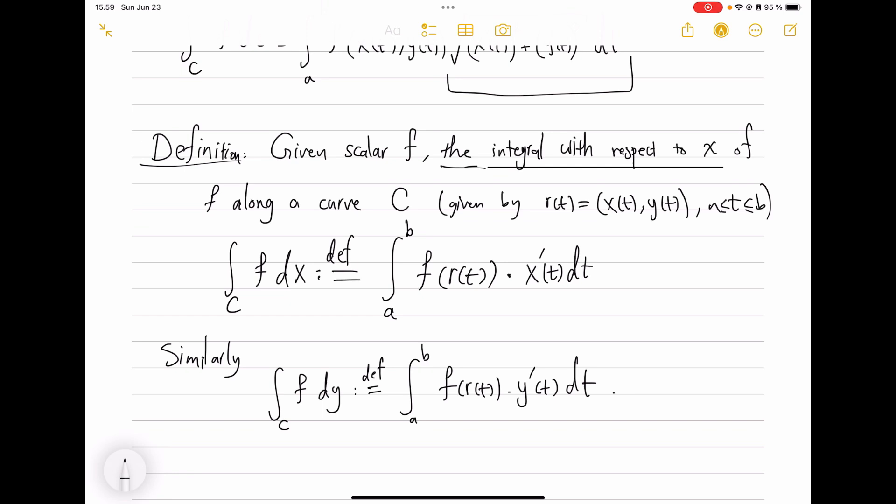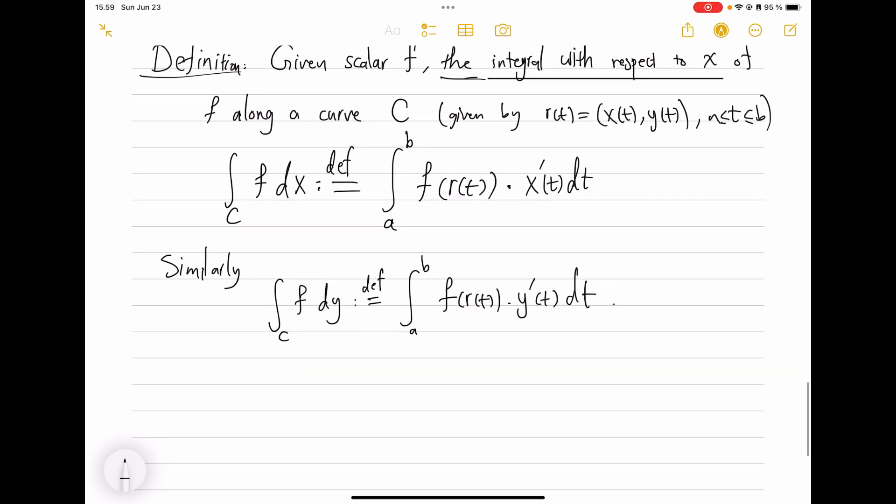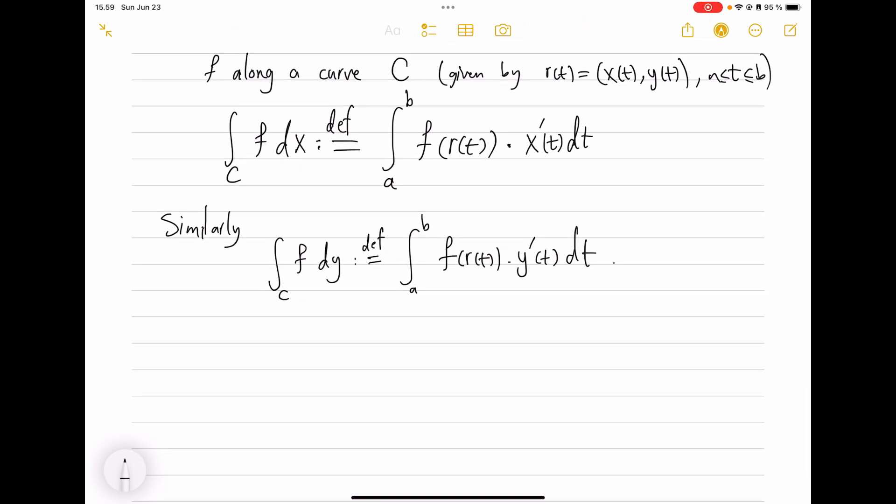So we have now defined three objects: integration of f against ds along the curve, integration against y, integration against x. Part of the reason this is defined will be explained when we talk about integrating vector fields along curves. But that one I want to do a separate video on. So in the next video we will see why we want to have these notations and why they are useful, as well as just f ds, which was useful already.